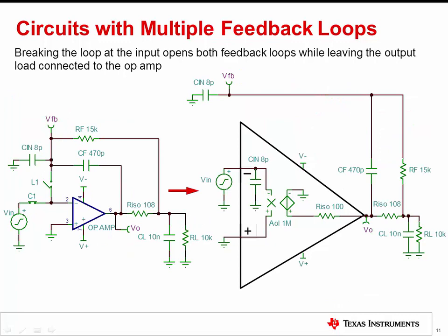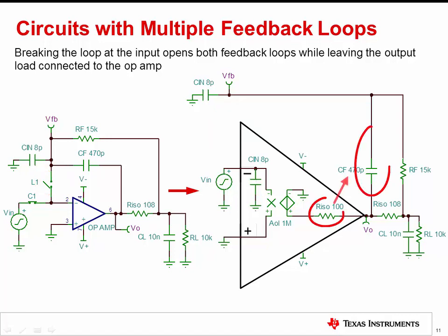The recommended method for this circuit and other similar circuits with multiple feedback loops is to break the loop directly at the inverting input of the amplifier. Breaking the loop in this location also disconnects both feedback loops, but now the output impedance of the op-amp can interact with the output loading and feedback network.